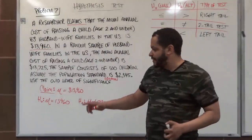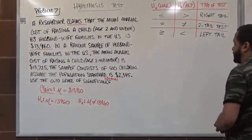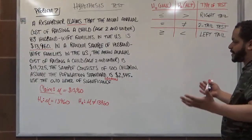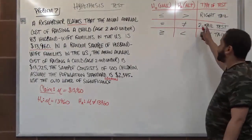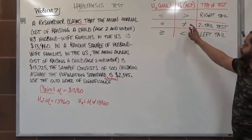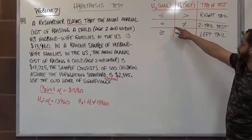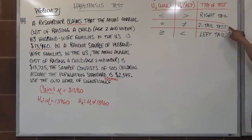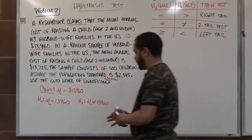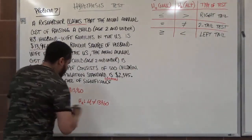The next step is to identify the type of test we're dealing with. Based on the equality and not-equal symbols used for the null and alternative hypotheses, we have a two-tailed test. That's step four.